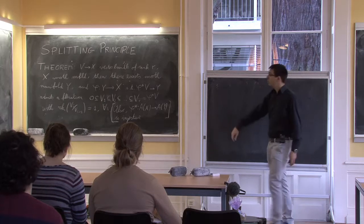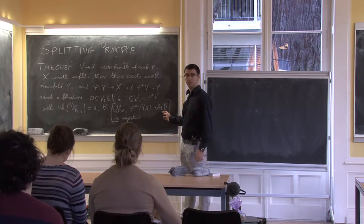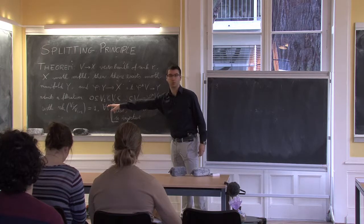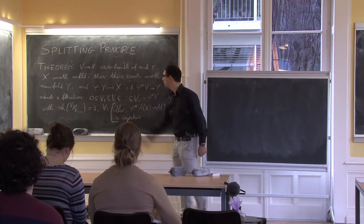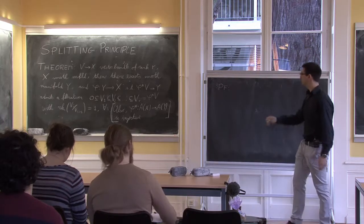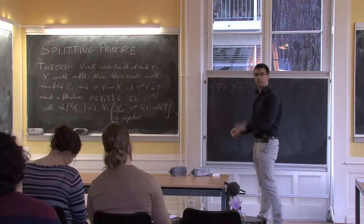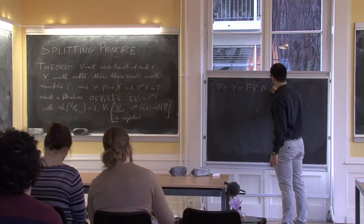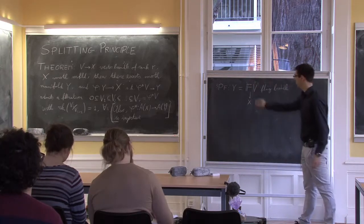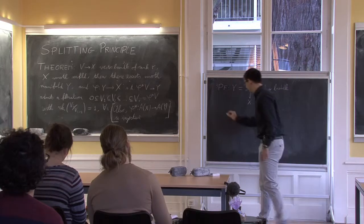Once we know that, by naturality we can compute the Chern class at least in the image of φ*, and since the pullback bundle admits this filtration we can use Whitney's formula. Now let's try to prove it — at least the main part. Let's define what Y is. Over X, with φ the projection of the bundle, let's define the flag bundle.